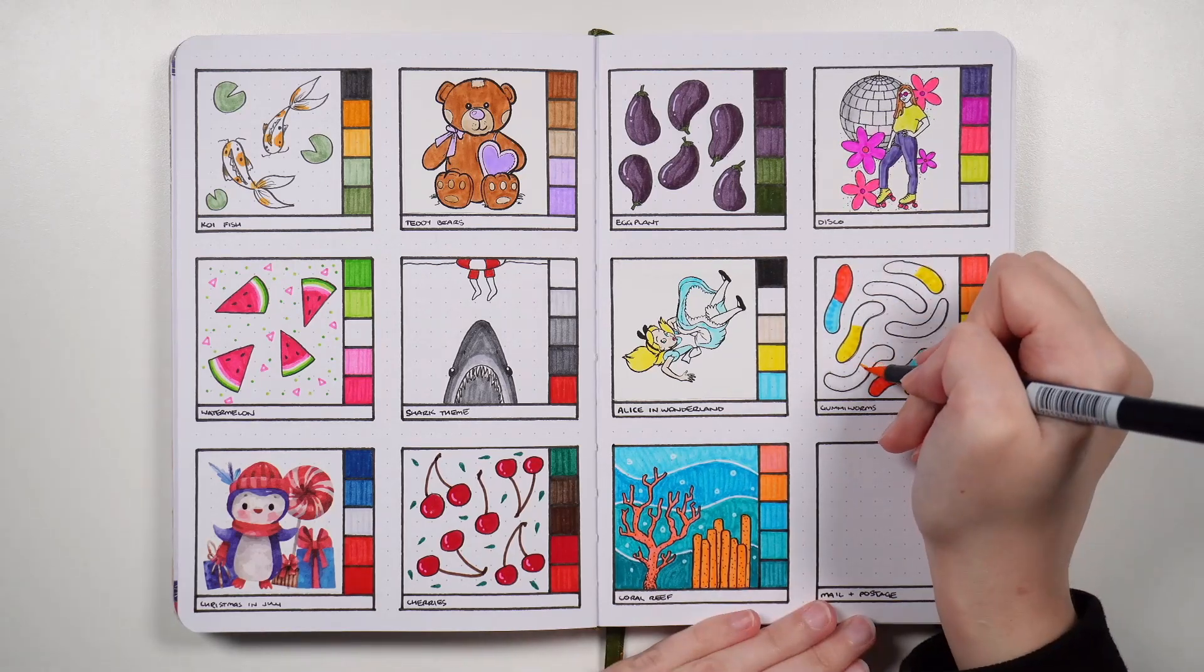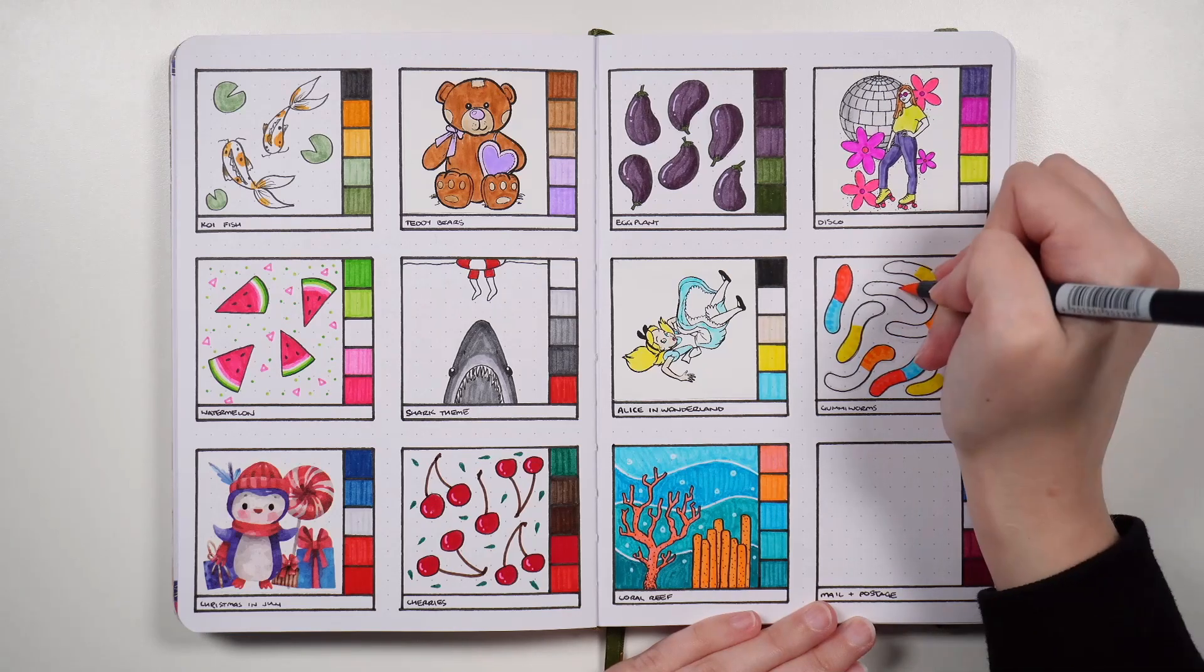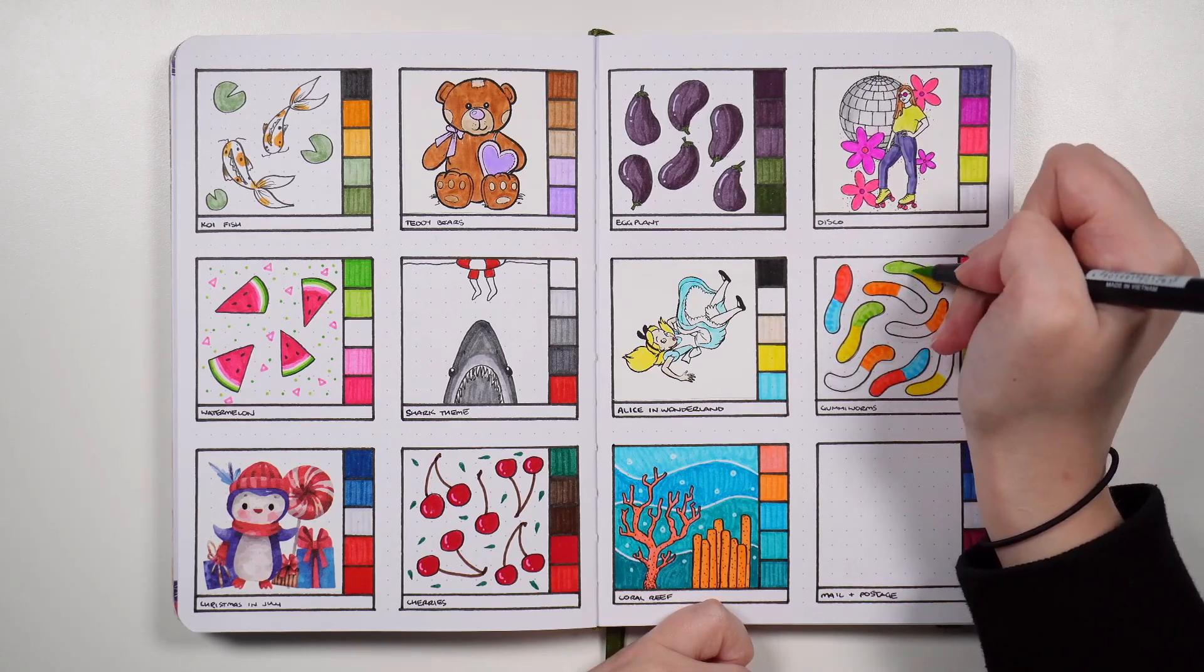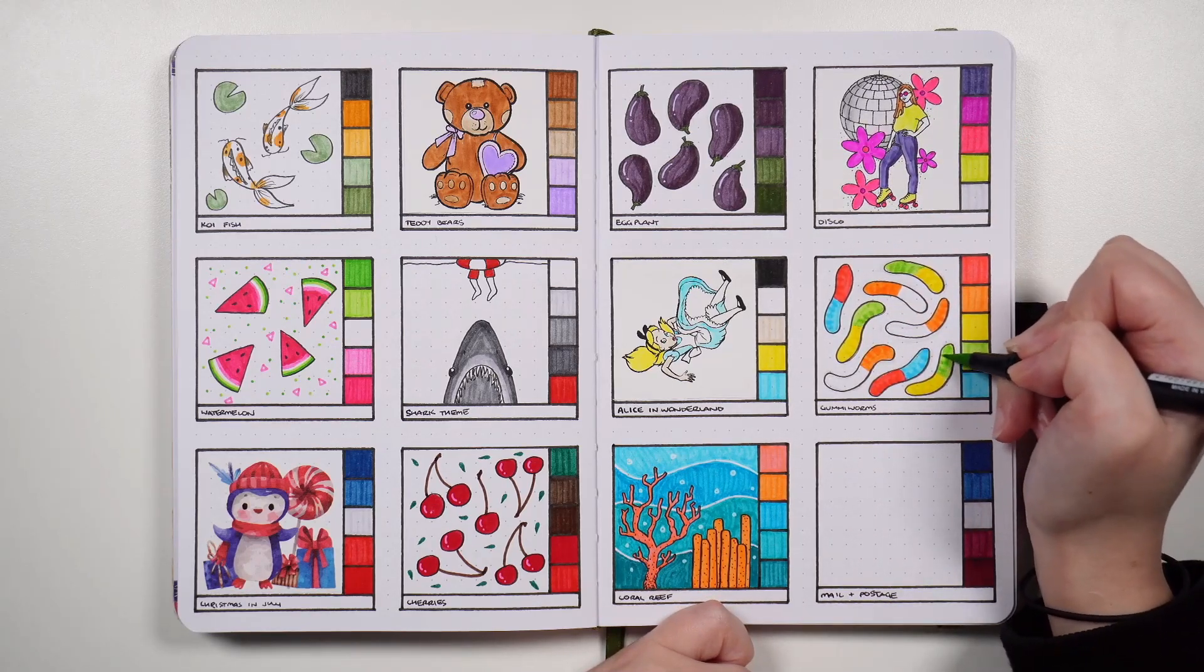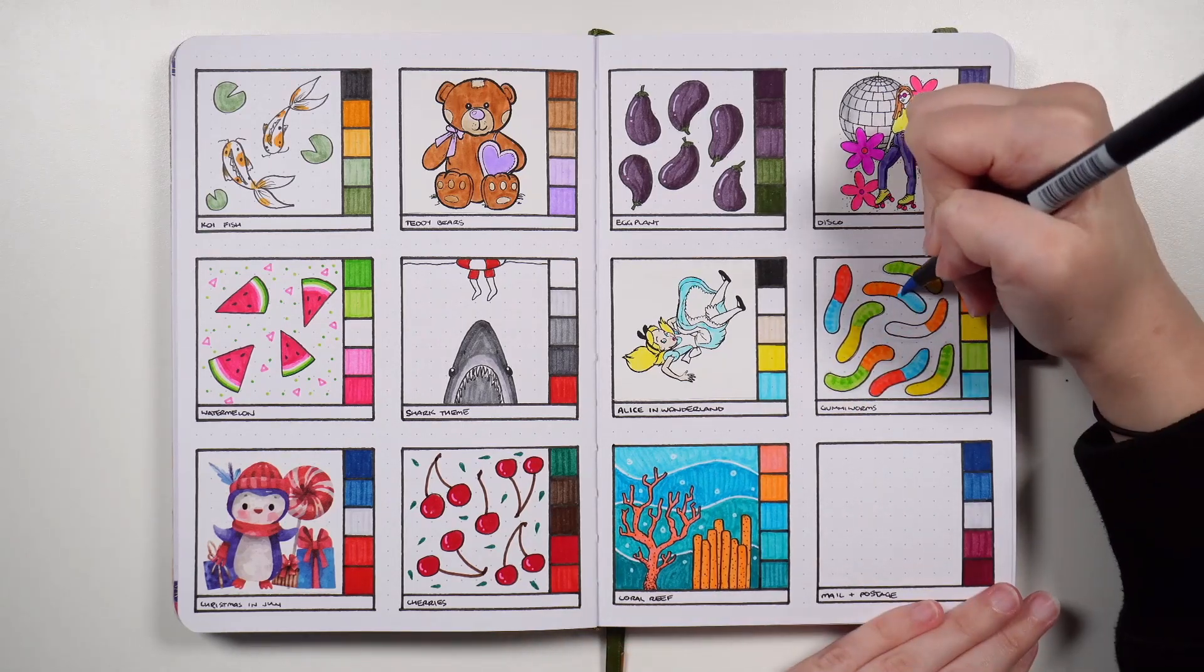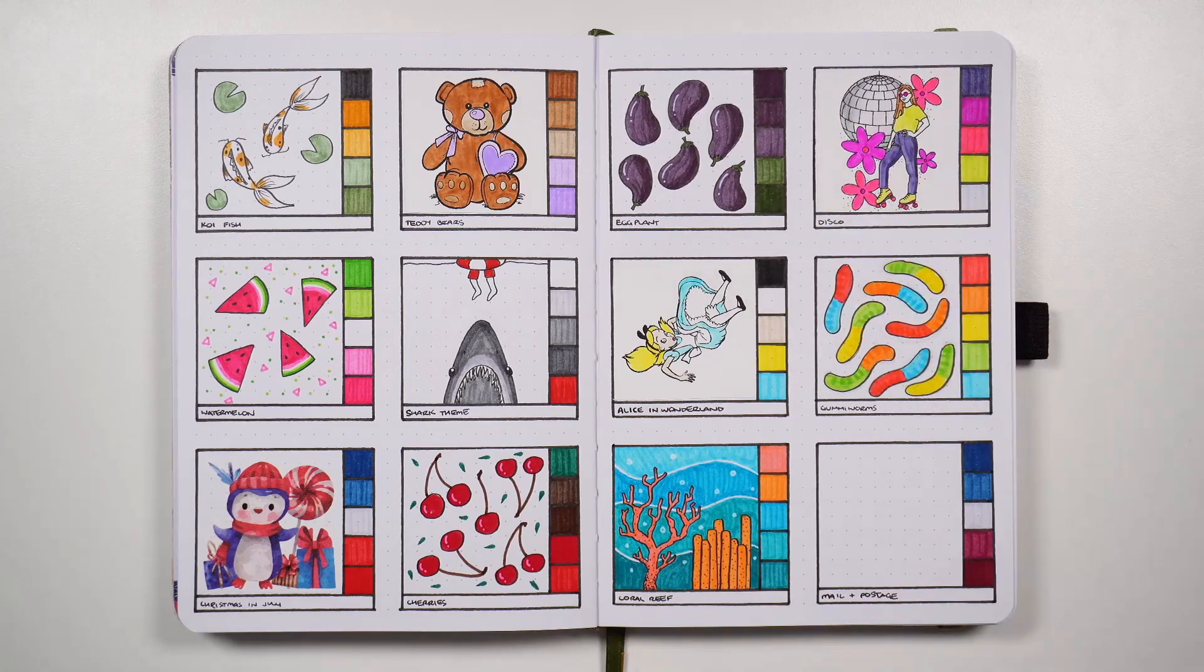For the gummy worms I'm drawing, I've picked my colour palette based on sour worms. The colours are a little bit more subdued because they've got all those sour crystals all over the outside of them. But I like that just by colouring in half the squiggle with one colour and the other half with a different one, you can pretty much instantly know that it's a sour gummy worm. As I said, just a really easy theme if you're not so confident with your drawing.